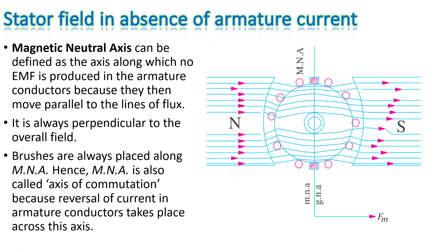The magnetic neutral axis is defined as the axis along which no EMF is produced in the armature conductors, because the conductors move parallel to the lines of flux. Here, the direction of the magnetic field is from north pole to south pole — horizontally. In this region, conductors move horizontally for a small portion, so they move parallel to the field, the flux linking through them is not changing, and no EMF is induced. That is why the magnetic neutral axis is always perpendicular to the overall field direction. Here, the main field direction is from left to right, so the magnetic neutral axis is vertical — perpendicular to the main field.